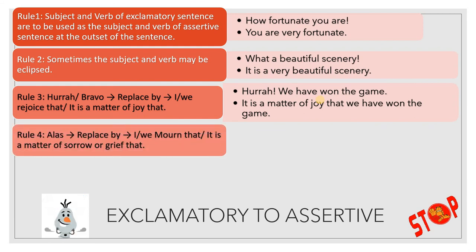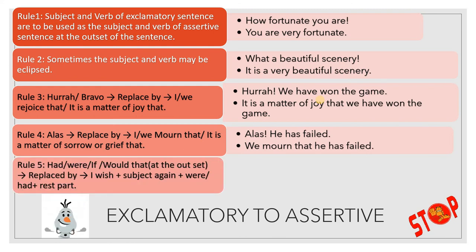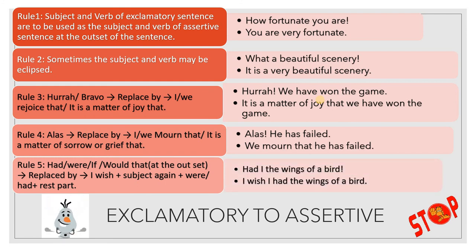'Alas' can be replaced by 'I moan' or 'we moan that' or 'it is a matter of sorrow or grief.' So 'Alas! He has failed' becomes 'We moan that he has failed.' Rule five: when a statement starts with 'had,' 'were,' 'if,' 'would,' or 'that,' it will be replaced by 'I wish' then the subject plus 'were' or 'had' and the rest of the statement. So 'Had I the wings of a bird' is a hope, and becomes 'I wish I had the wings of a bird.' Assertive to exclamatory uses these rules vice versa.